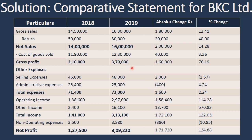By looking at this statement, we can easily make out which item has increased by a greater proportion and which item has decreased or increased by a lesser proportion. We can easily compare the two years' performance item-wise — whether it is because of selling expenses or administrative expenses, or operating income or other income, or the overall cost of goods sold, or what exactly has impacted net profits. That is the beauty and the utility of the comparative statement, and that is why it is used for financial statement analysis.